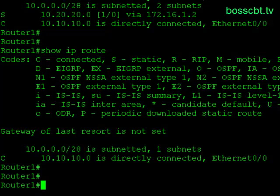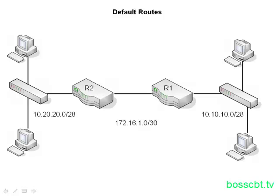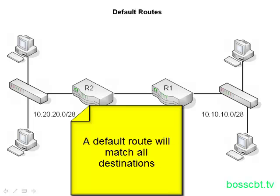Let's look at the final route type, which is the default route. A default route is used as a catch-all. When the remote destination IP address is not in the route table, the default route will match it and enable the router to route that packet. Essentially, a default route matches all destinations if an exact match is not found in the IP route table.